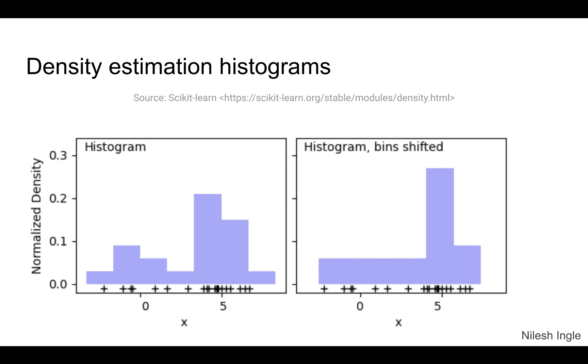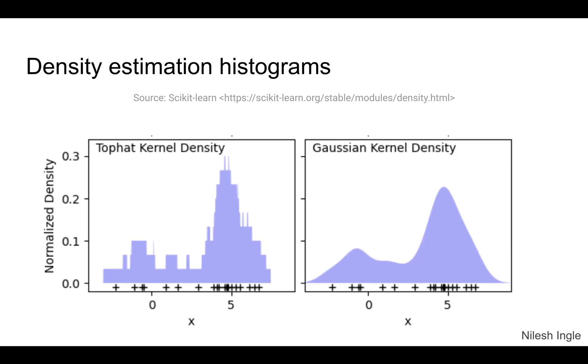There are other ways to plot density estimation histograms, such as shown here. Scikit-learn offers tophat kernel density, which is shown here on the left hand side.